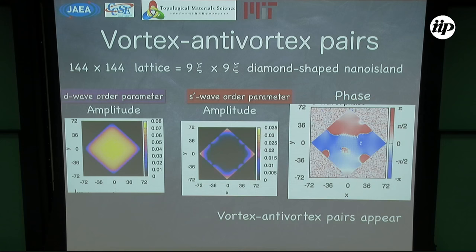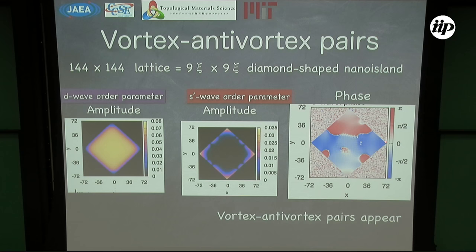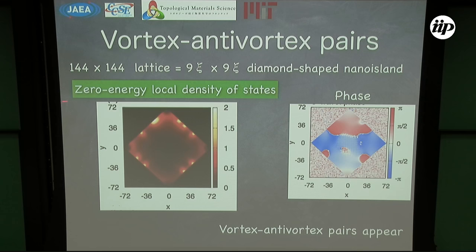So we increase the lattice size and consider a larger 19×19 diamond-shaped nano island. The amplitude of the d-wave order parameter is very similar to that in the small system. But if we focus on the amplitude of the extended s-wave order parameter, the amplitude is different. We can clearly see a strong phase difference — blue denotes the minus pi phase and red denotes the pi phase. This indicates vortex-antivortex pairs. To confirm this, we calculate the zero-energy local density of states. We can clearly see zero energy bound states at these regions, with different winding — confirming vortex-antivortex pairs.